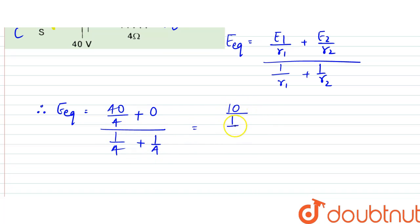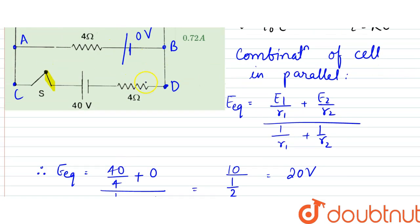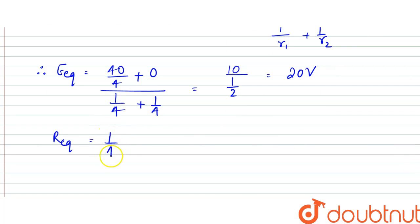that is 10, divided by half, which is equal to 20 volt. And the R equivalent here is equal to, since this would be in parallel condition, that is 4 and 4. So 1 by R equivalent would be equal to 1 by 4 plus 1 by 4.